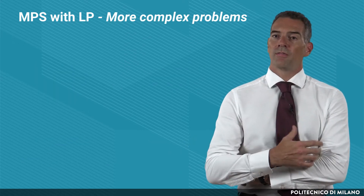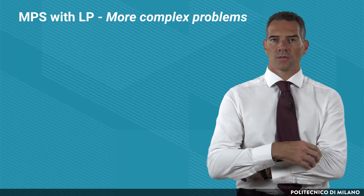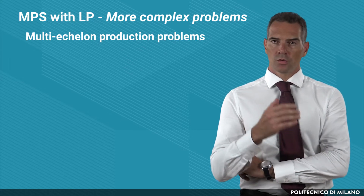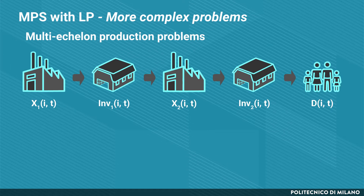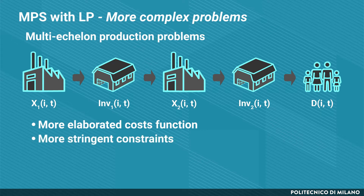Linear programming is a very flexible methodology. For instance, you can build more complex models of your whole planning problem — for example, a multi-stage production problem with two production stages separated by two inventories. As shown in the sketched equations, the formulation can be easily adapted by simply rewriting the materials balance equations. You can also introduce more elaborated cost functions, such as removing the no stock-out assumption by introducing lost-sale costs, or introducing more stringent constraints such as perishable inventories.